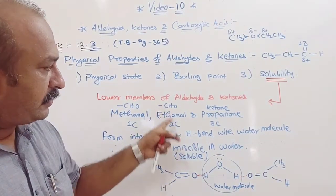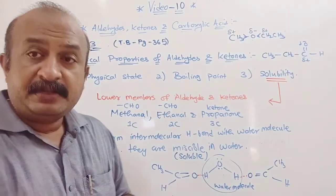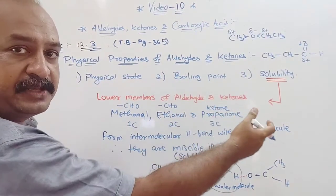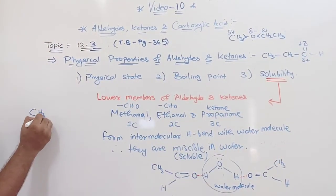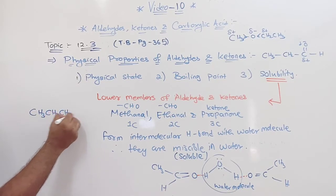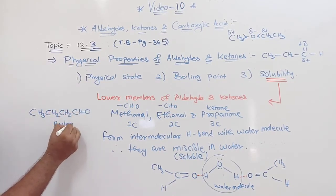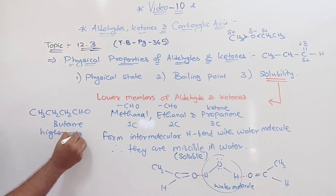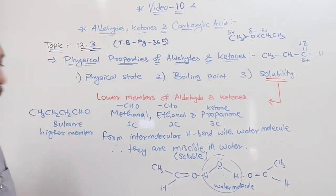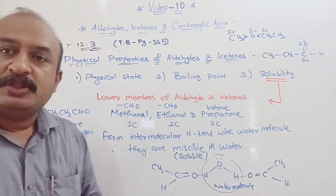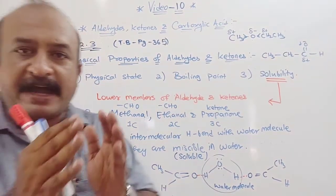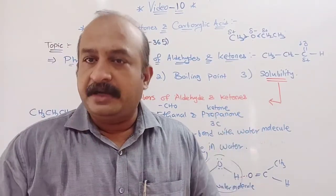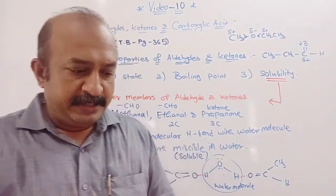Now when the number of carbons increases — for example, butanal: CH3CH2CH2CHO, which is a higher member — as the number of alkyl groups keeps on increasing, the solubility keeps on decreasing. This is about the solubility aspect, as given in the last paragraph of your textbook.